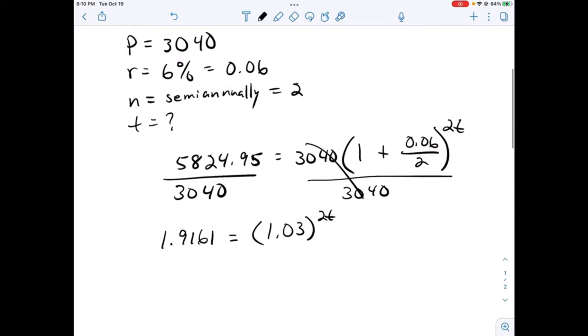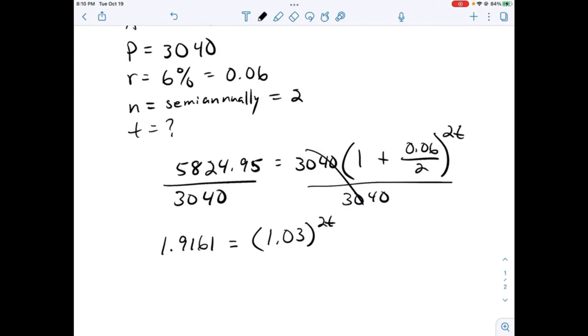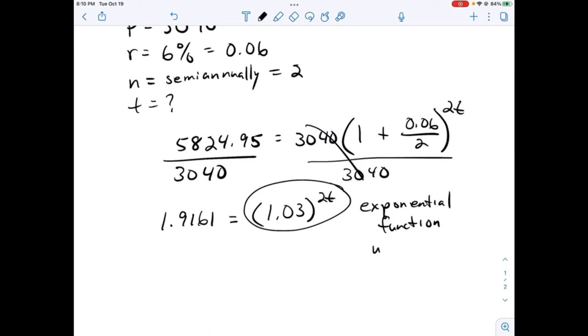How does one try to find time in this case? As we know, this part is an exponential function. How do we turn an exponential function into a linear function? We're going to use the log function or the logarithm.